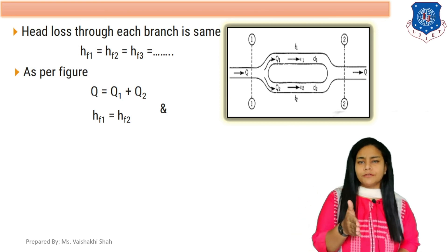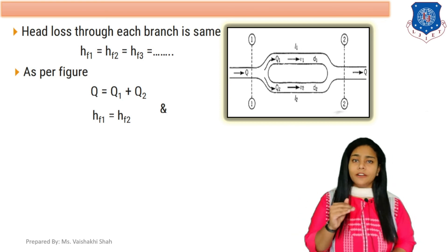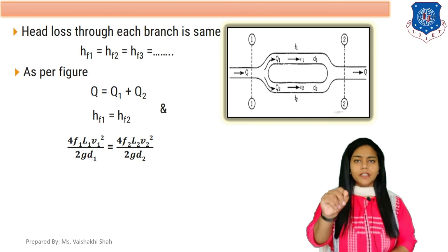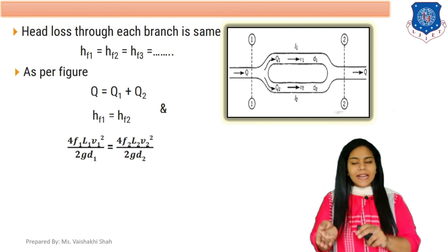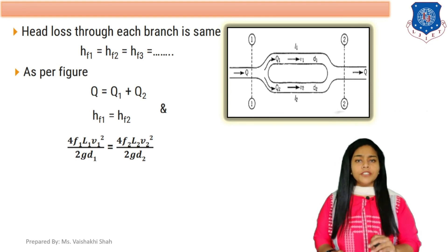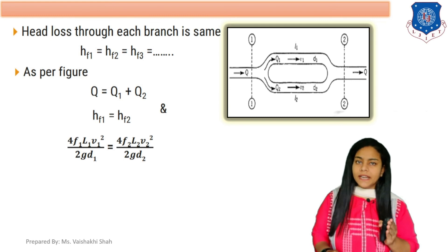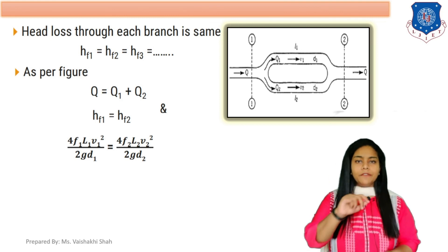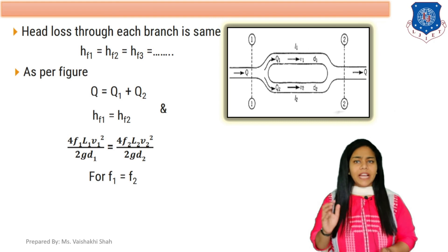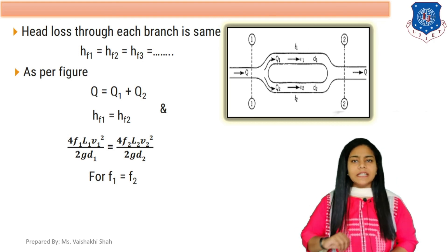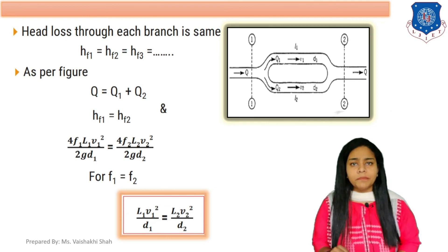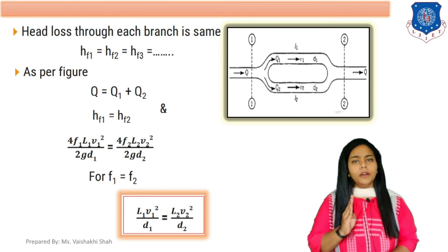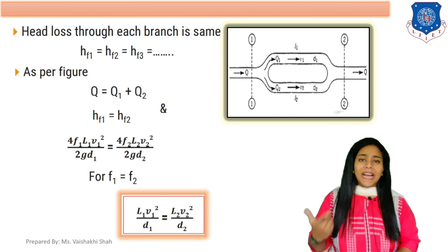The head loss is the same for all branches: HF1 = HF2. Applying the Darcy-Weisbach equation, head loss due to friction in pipe one is 4f1·L1·V1² / (2g·D1) and in pipe two is 4f2·L2·V2² / (2g·D2). Since HF1 = HF2, if the friction coefficient is the same for both pipes (f1 = f2), the equation becomes: L1·V1² / D1 = L2·V2² / D2. This is the equation for pipes in parallel.